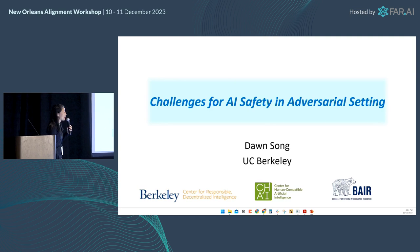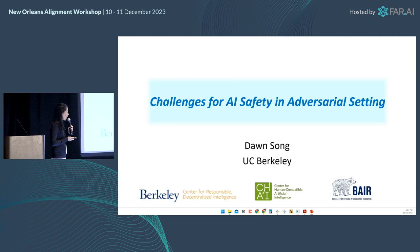Thanks everyone. My name is Dong Sun. I'm from UC Berkeley, and I'm a director at the Berkeley Center for Responsible Decentralized Intelligence, and also affiliated with Chai and Bear.